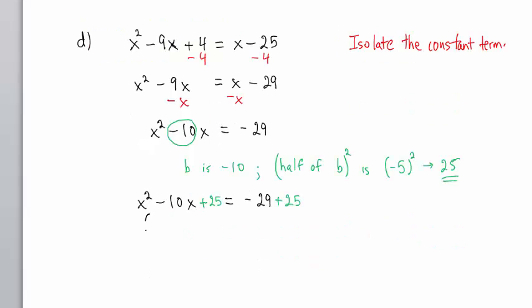The left-hand side factors as x minus 5 times x minus 5. That is a squared quantity, and that which follows the x is the half of b value, the negative 5. We have x minus 5 squared equals negative 4.